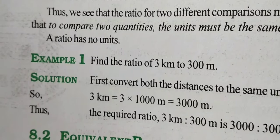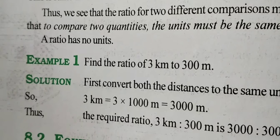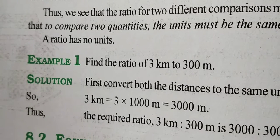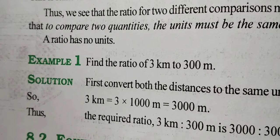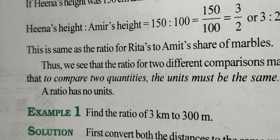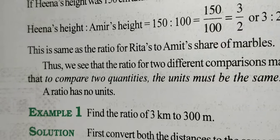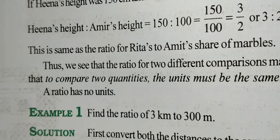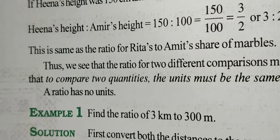The first example: find the ratio of 3 kilometer to 300 meter. We compare two quantities on the basis of the ratio. We all have to remember that when you are comparing two quantities, the units must be the same. And when we write the ratio, we never write the unit because a ratio has no units.